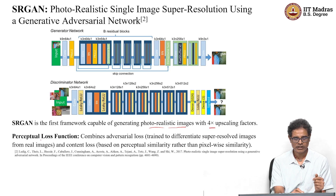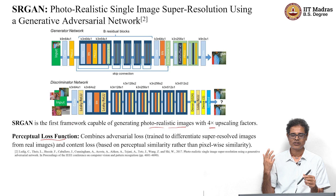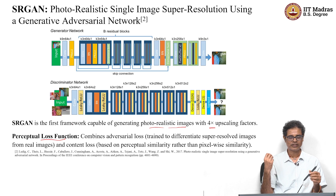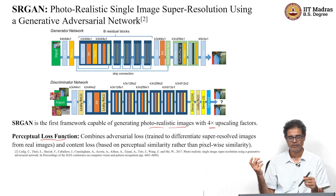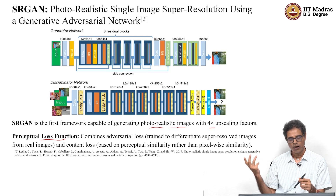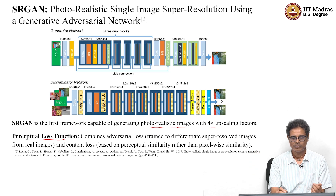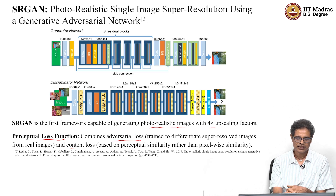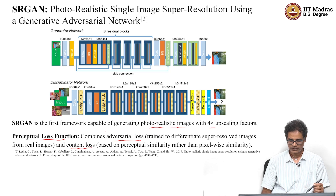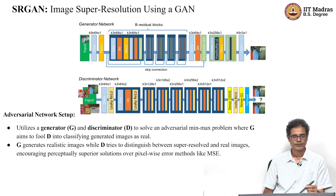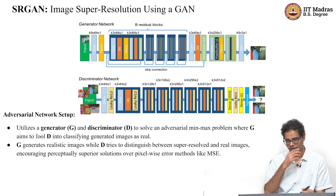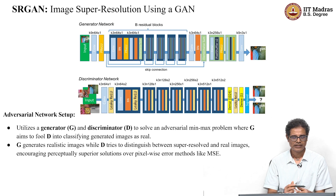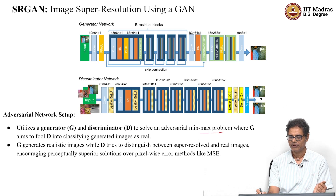SRGAN uses perceptual loss. Mean square loss is not good because it produces blurred output. Instead, this paper proposes adversarial loss because it produces photorealistic images, along with a content loss. These two losses are what they use. The generator and discriminator try to fool each other and solve a min-max problem, where the generator's goal is to fool the discriminator and the discriminator tries to identify what is real.